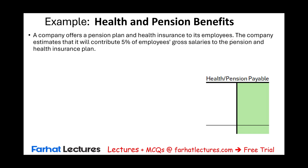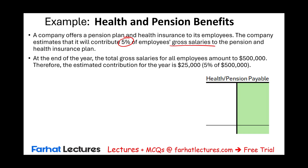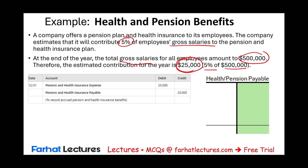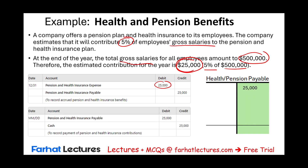A company offers a pension plan and health insurance. They estimate they will contribute 5% of employee gross salaries. At year-end, total gross salaries are $500,000, so 5% means recording an expense of $25,000. They debit pension and health insurance expense $25,000 and credit pension and health insurance payable $25,000 — booking the liability now to be paid later. When paid, they debit the liability and credit cash, removing the liability to zero.